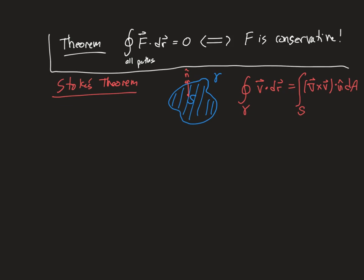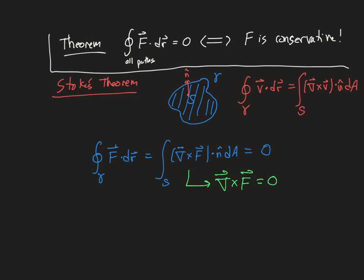Applying Stokes' theorem to our problem: for an arbitrary path gamma, the closed loop integral of F·dr equals the surface integral of (curl F)·n̂ dA over the enclosed surface. Now we remember that this integral must equal zero by our theorem. The area element can't be zero, the normal vector can't be zero, and the surface can't be trivially zero. So the only way this surface integral can be zero for any arbitrary path is if the curl of the force equals zero.